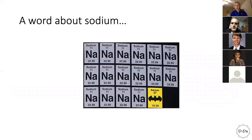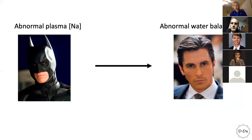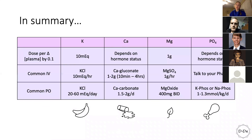A quick word about sodium: it's the most common electrolyte we think of early in med school. But abnormal plasma sodium is actually an abnormal water balance problem, not simply a sodium deficit or excess. The body is very good at handling sodium, so it's typically not total body sodium you're concerned about — it's water balance, which could involve ADH or other issues. Abnormal plasma sodium really means abnormal water; this topic deserves its own session.